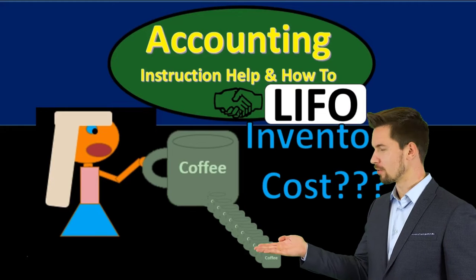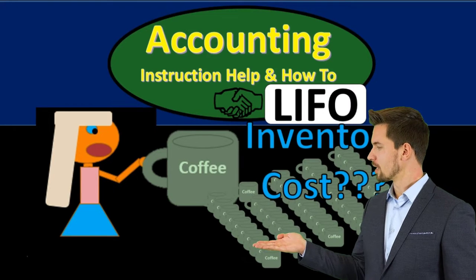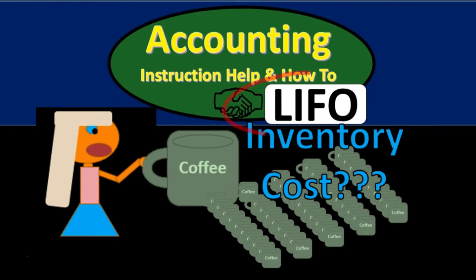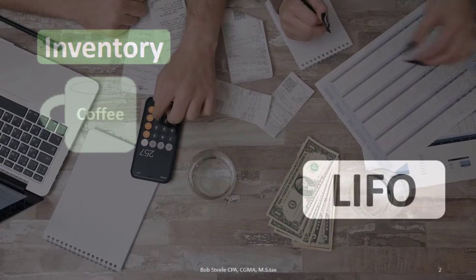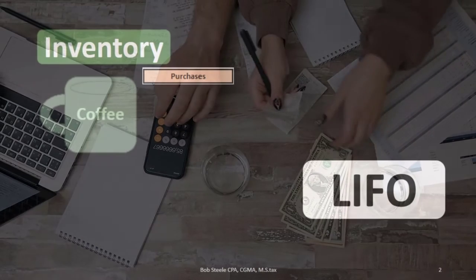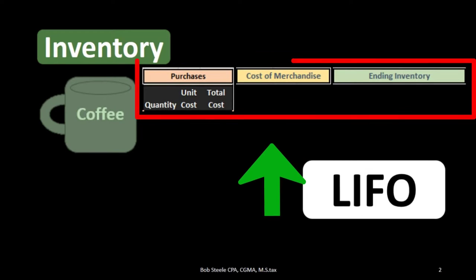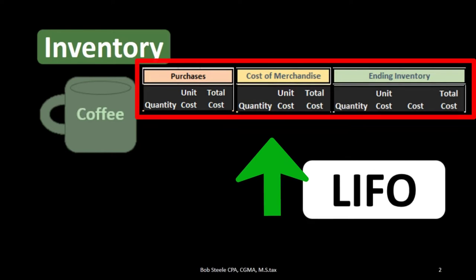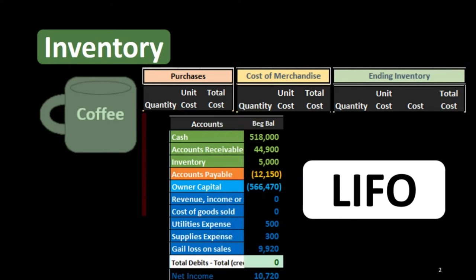In this lecture we're going to be talking about the last in first out inventory method. We will be selling coffee mugs using a cost flow method — that method being last in first out. When doing a cost flow method, I recommend setting up a worksheet with three parts: purchases, the cost of the merchandise, and the ending inventory, then calculating the units, unit cost, and total cost for those categories.